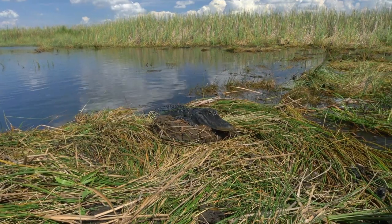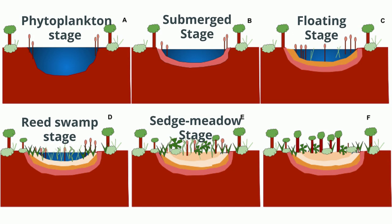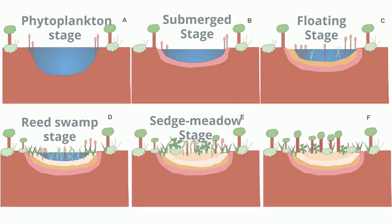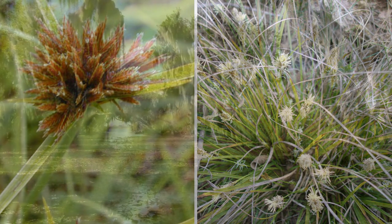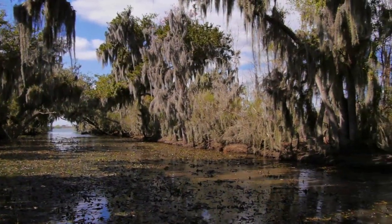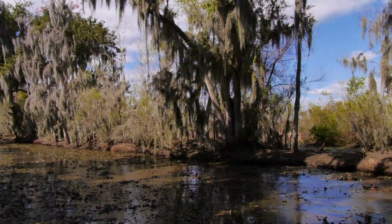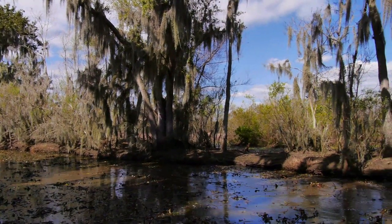Next we have the Sedge Meadow Stage. During this stage, the water level continues to lower, which allows sedge plant members to grow. Sedge plants are grass-like plants with triangular stems and flowers. These plants add additional leaf litter to the soil. Eventually, the sedge peat accumulates above the water level, and the soil is no longer totally waterlogged.